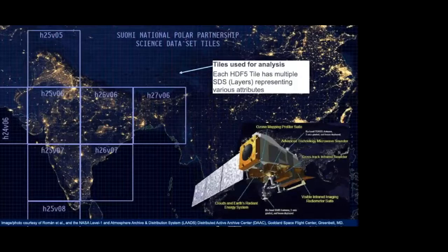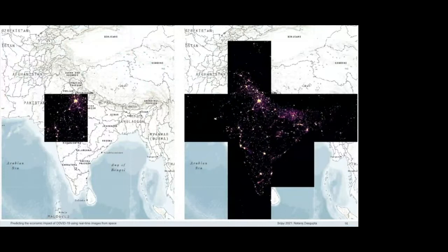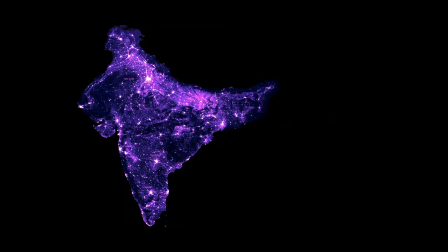For nightlights in India, there are essentially eight to nine tiles needed to cover mainland India plus the islands. This is what it looks like using the QGIS platform — here are all eight tiles downloaded from the NASA website. The next image shows when all the images have been joined together — called creating a mosaic — giving a full picture of what nightlights look like across India.